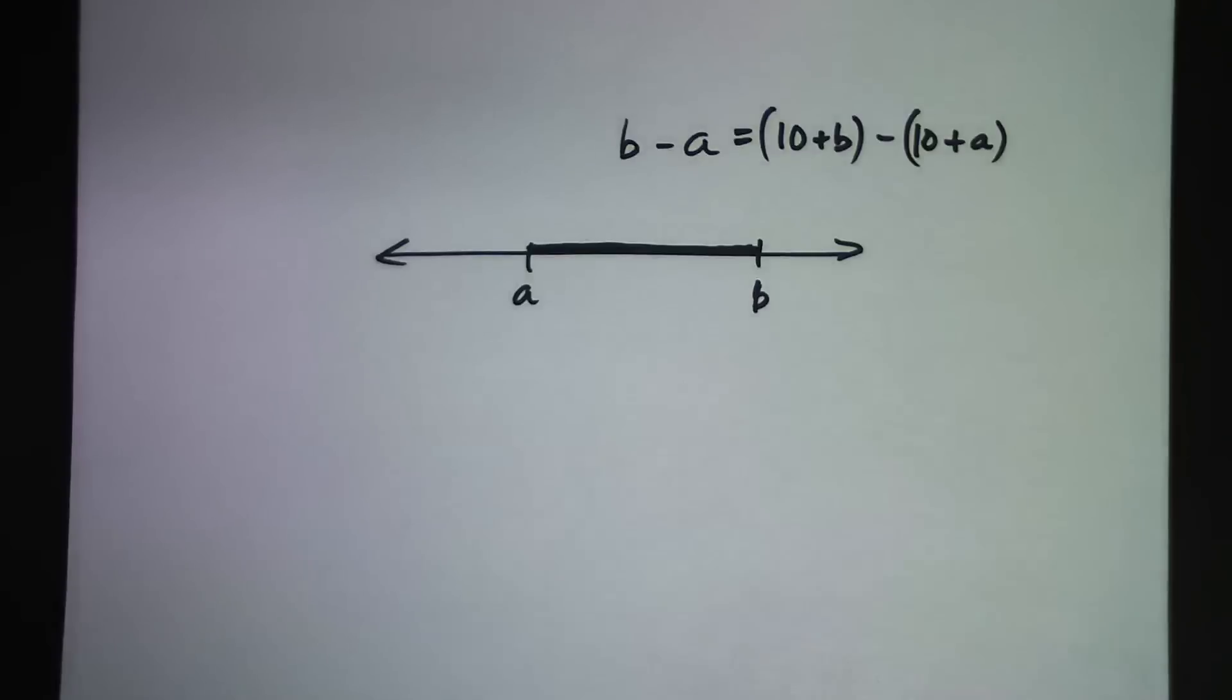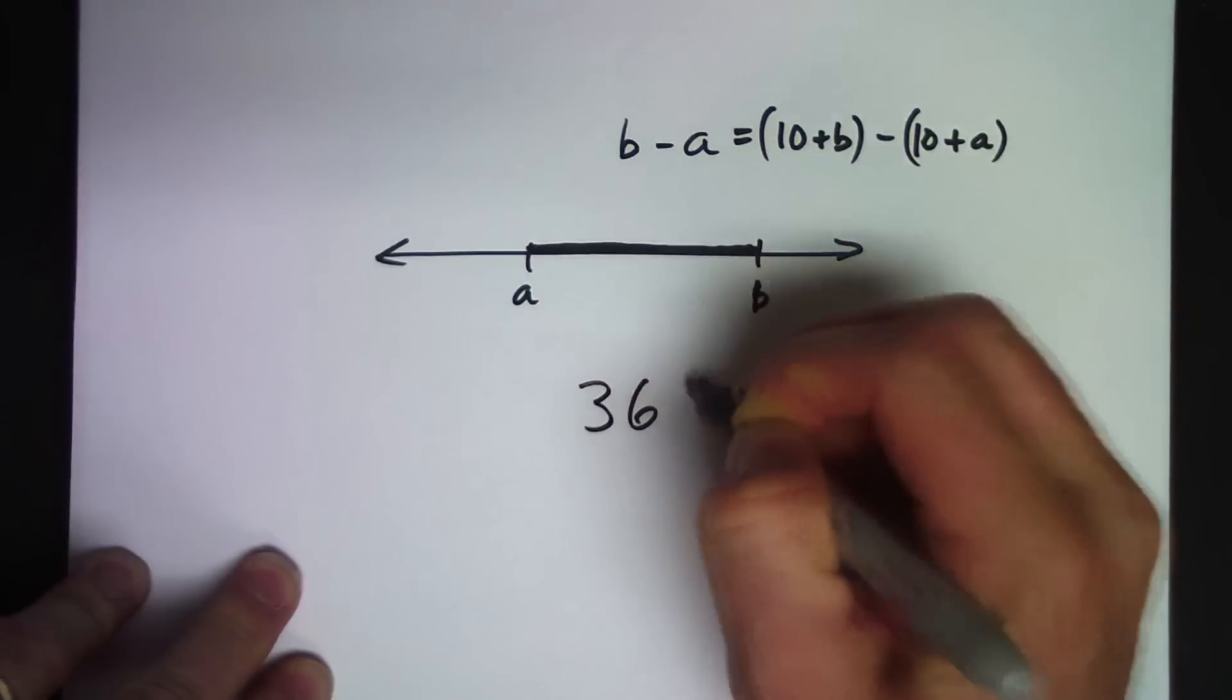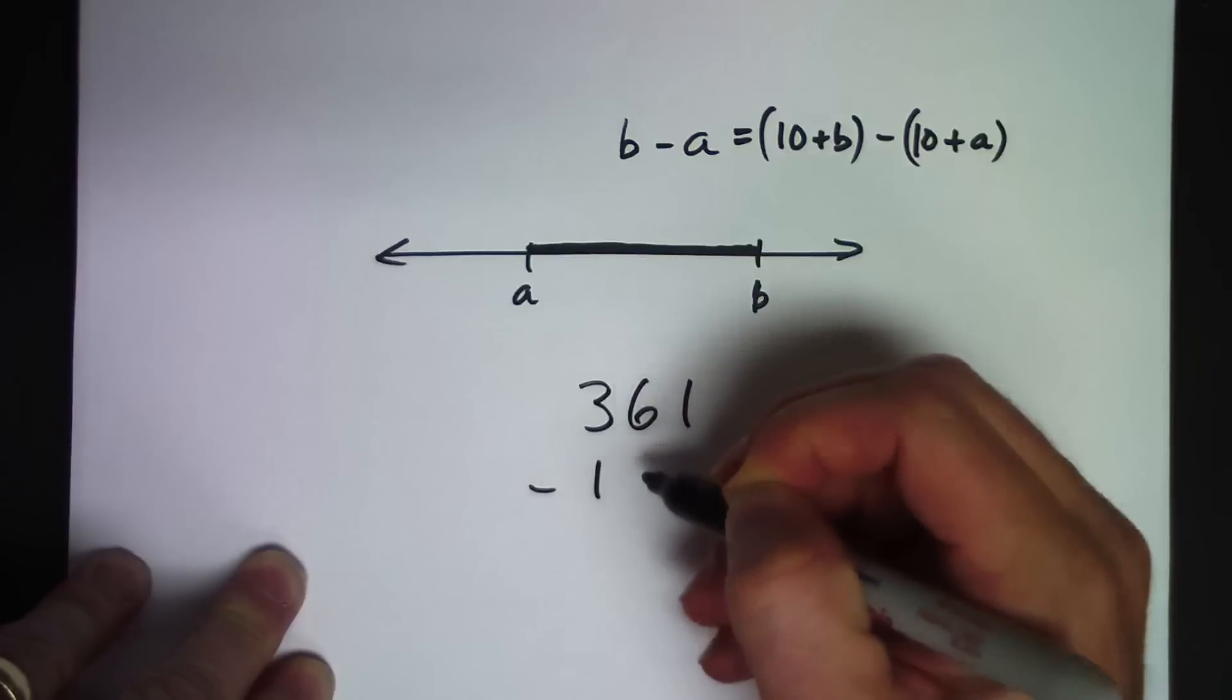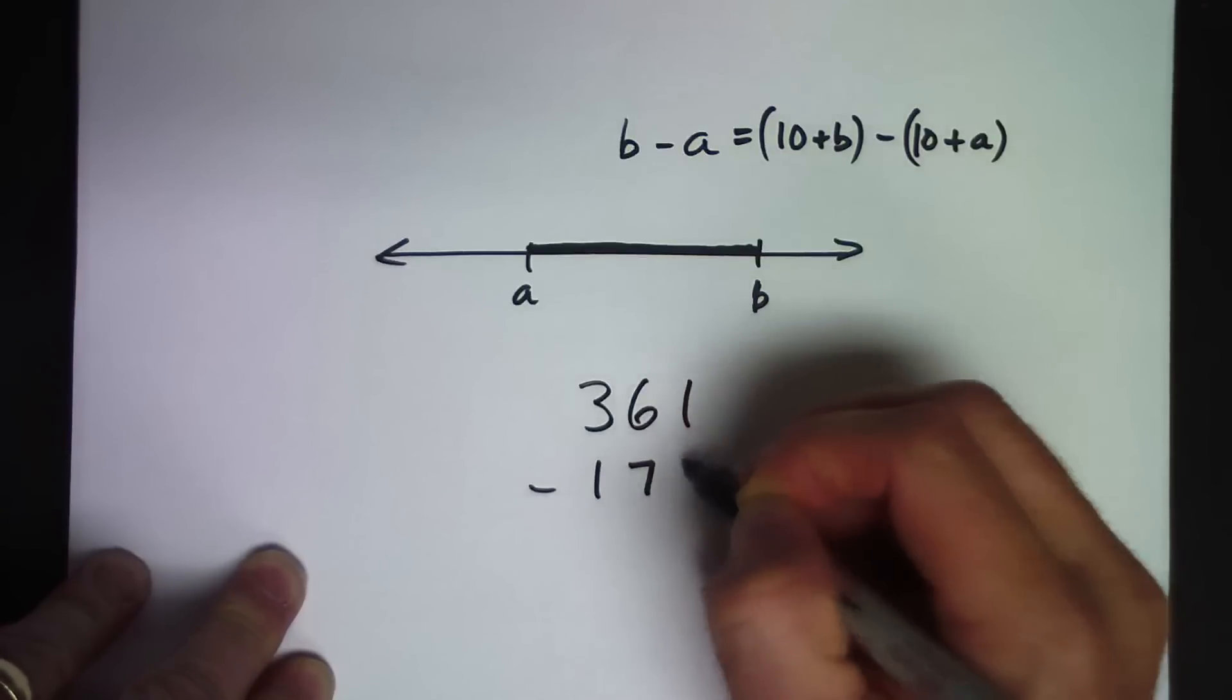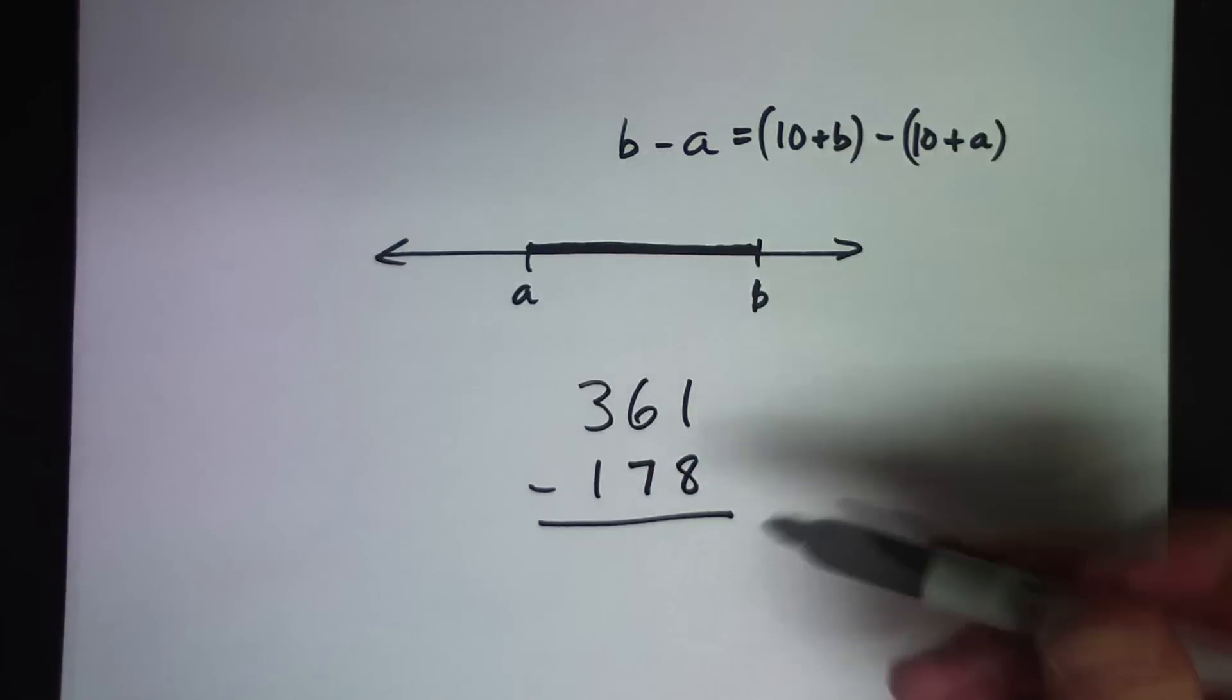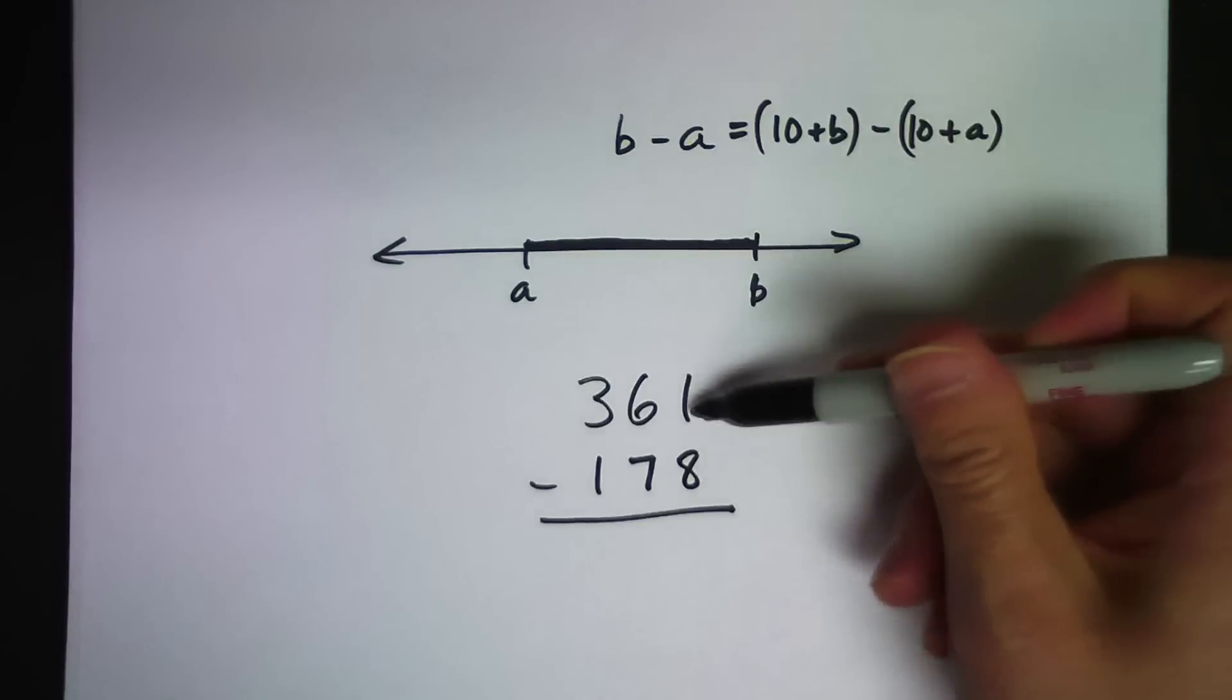Okay, so let's look at a specific example. Let's say 361 minus 178. Alright, so here's a case where the first thing I'm going to do is try to take 8 from the 1—8 ones from the 1 one that I have. Well, I don't have 8 ones,